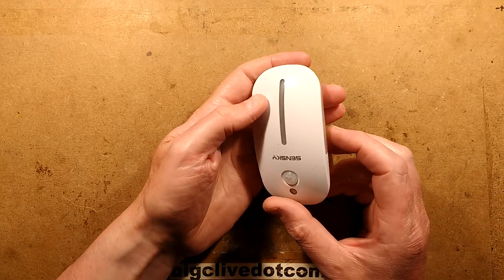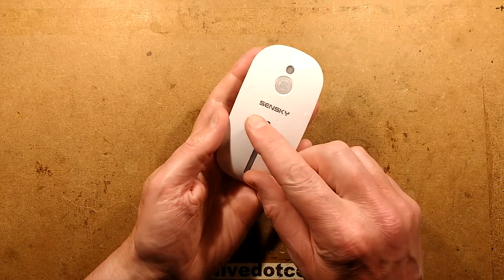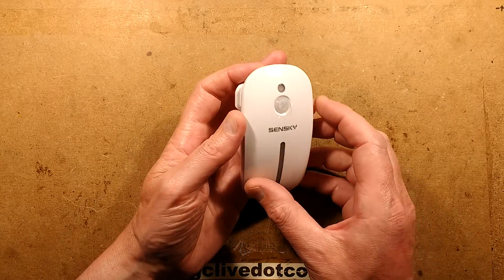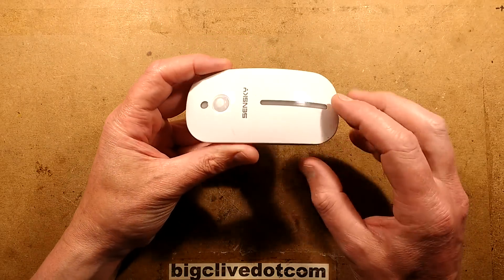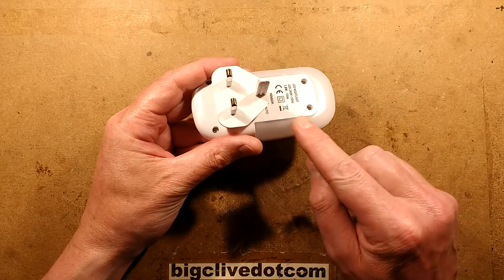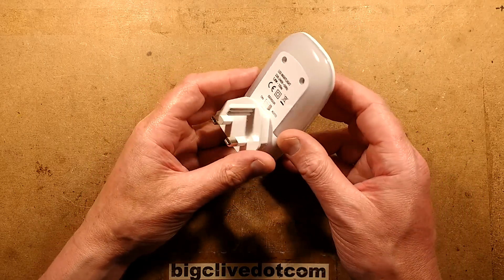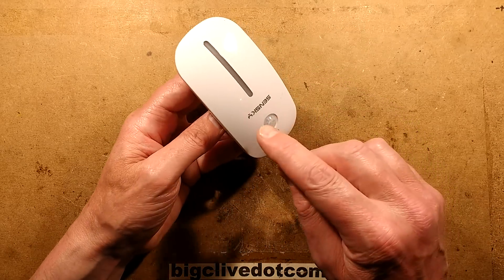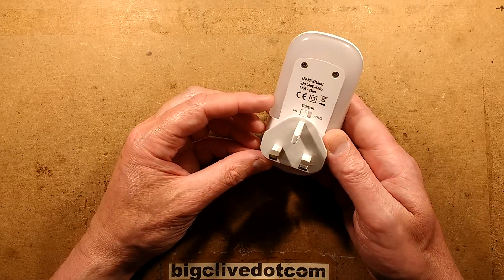I think it's time for another autopsy and this time it's a Sensky nightlight which has a passive infrared detector and dusk sensor on it. It seems to have a channel presumably for LEDs in the front and then a sort of halo of LEDs at the back. It's interesting to note that if you plug this in the right way up in a UK socket, the text on the front is actually upside down, which is a bit odd.